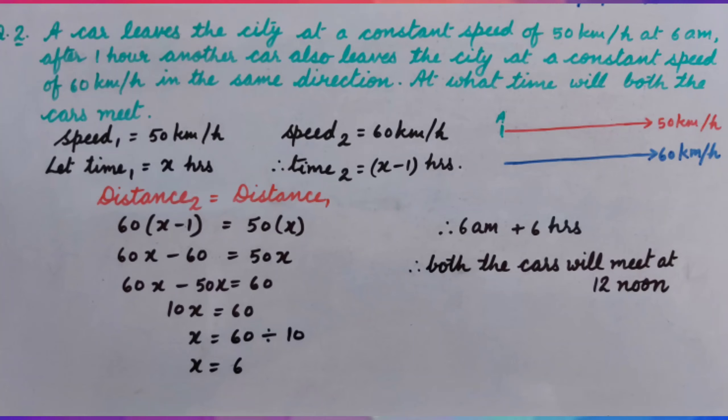So, the equation is 60 multiplied by x minus 1 equal to 50 multiplied by x. Solving the equation, we get x equal to 6.